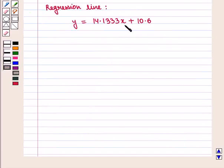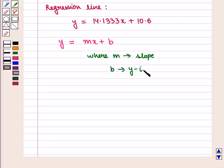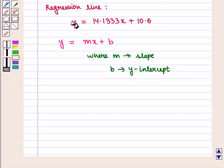Now, the regression line is of the form y equals mx plus b, where m is the slope and b is the y-intercept. On comparing the two equations, the value of slope m is equal to 14.1333 and b is equal to 10.6.